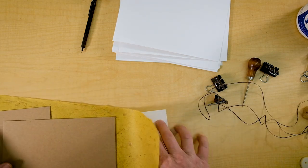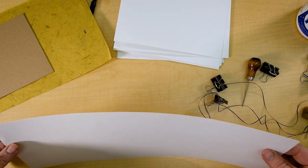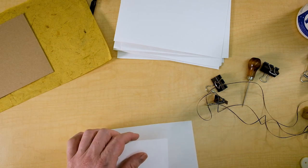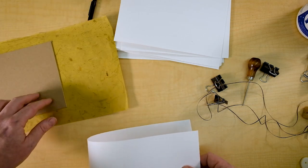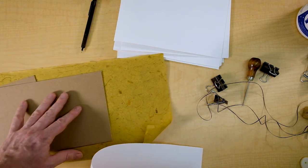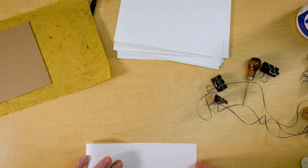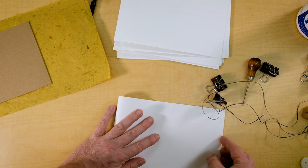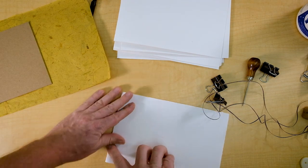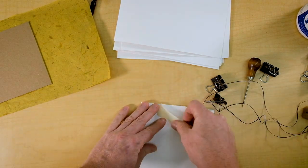So to begin, we need nine sheets of this for the pages inside the book and then a tenth, one extra that will cover our inside here. We fold these in half like that.